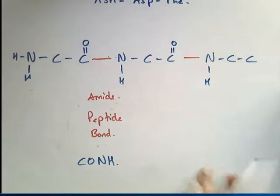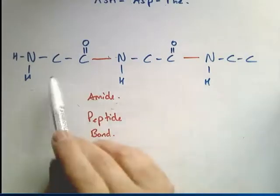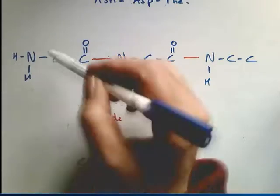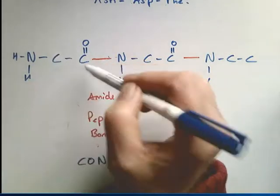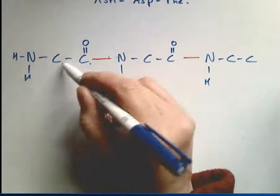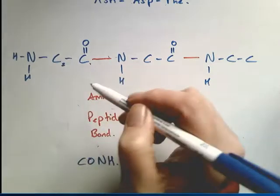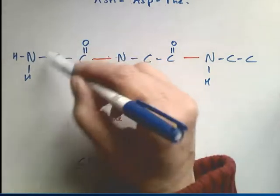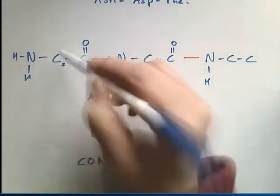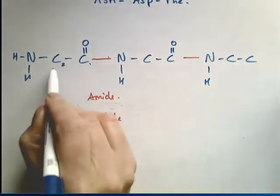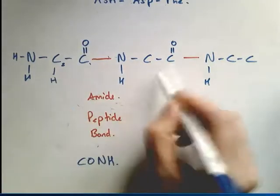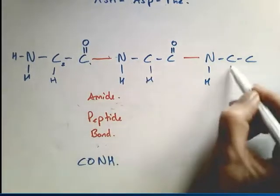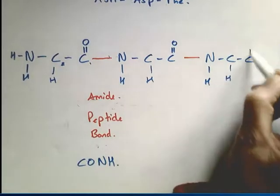We've got our three amino acids and the middle carbon — they're all linked through the backbone. The middle carbon has four bonds, so don't forget the hydrogen bond at the bottom — I always forget that one.